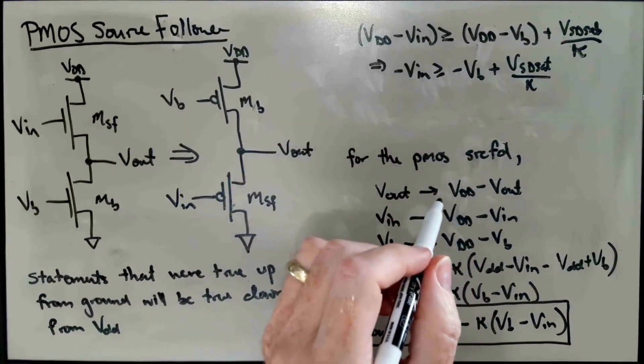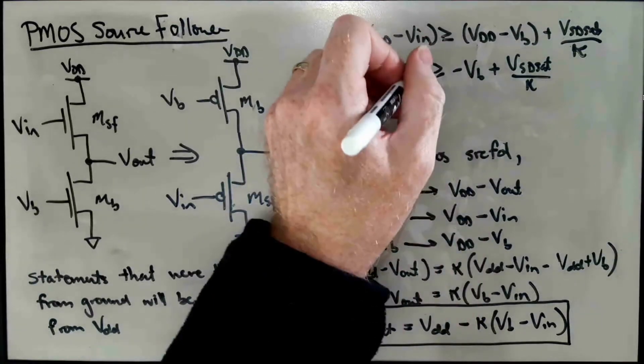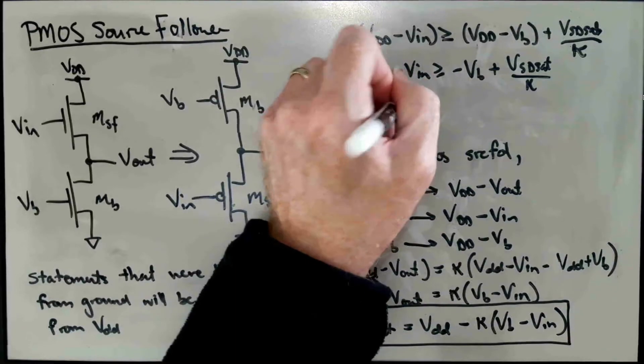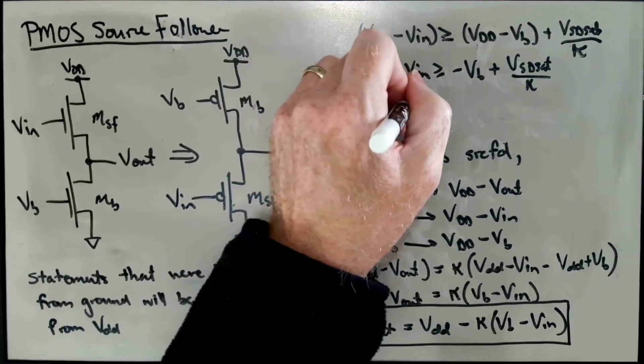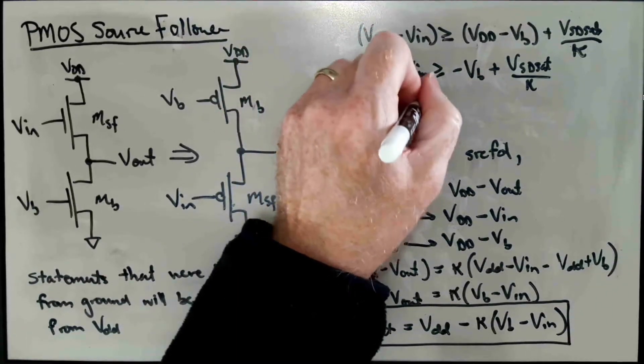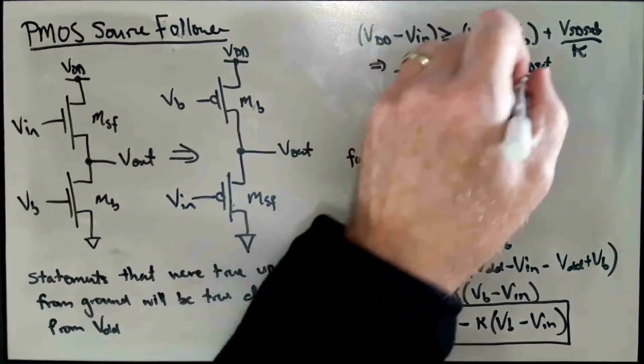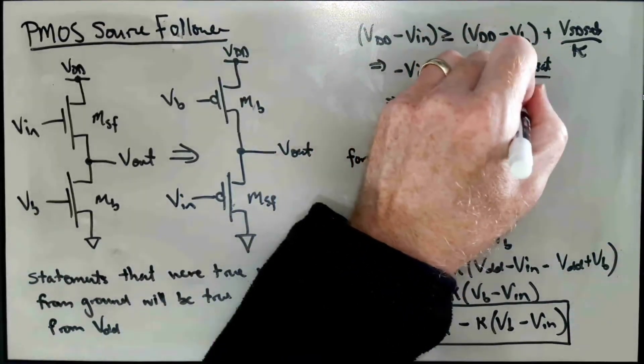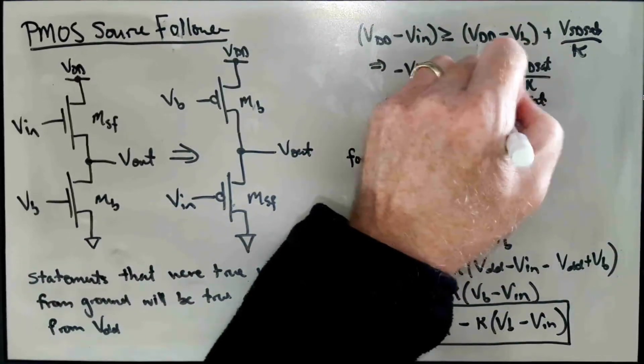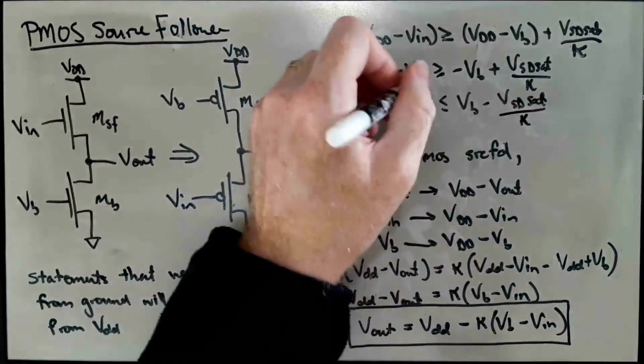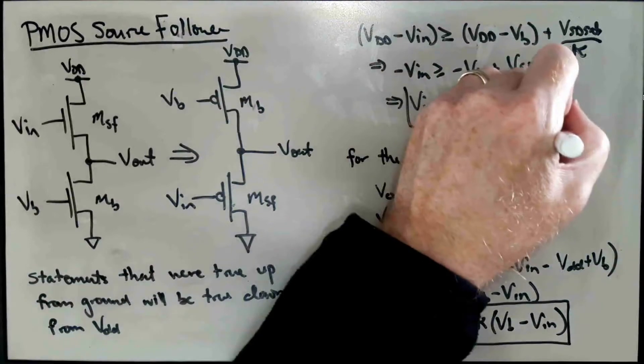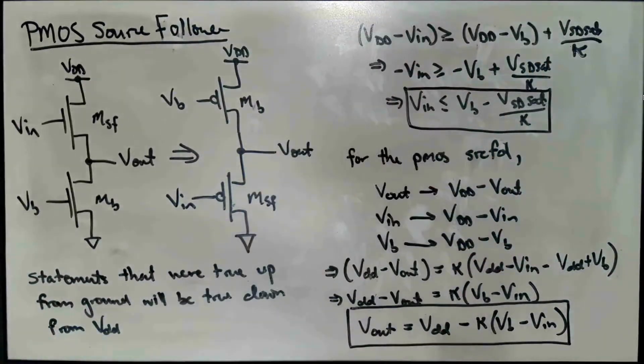The other thing we could do is we could imagine transposing both sides to the other side, and that would, in effect, have the same result. But let's just multiply by minus one and flip the sense of the inequality. So it would be VIN less than or equal to VB minus VSDsat over Kappa.